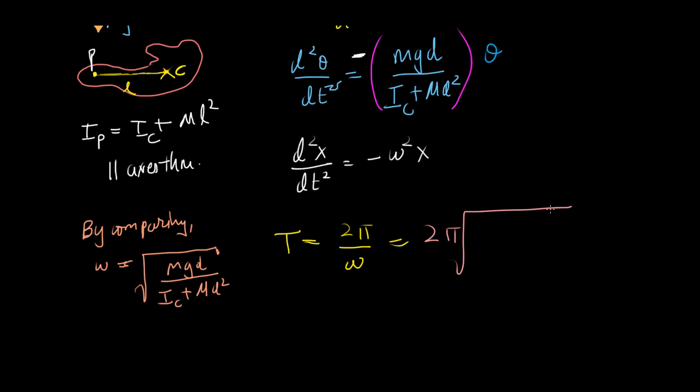The square root of I about c plus md squared divided by mgd. There you go.